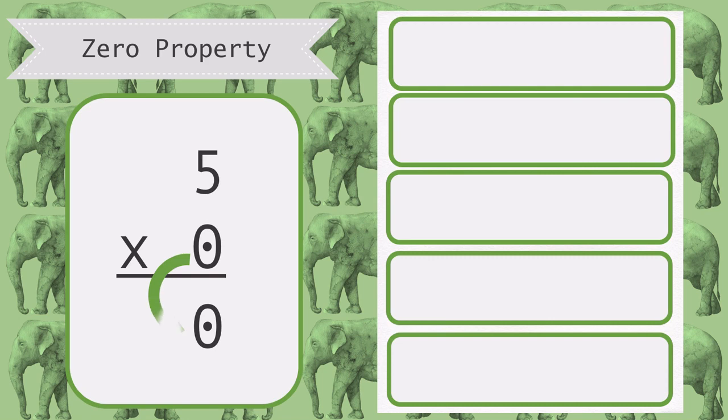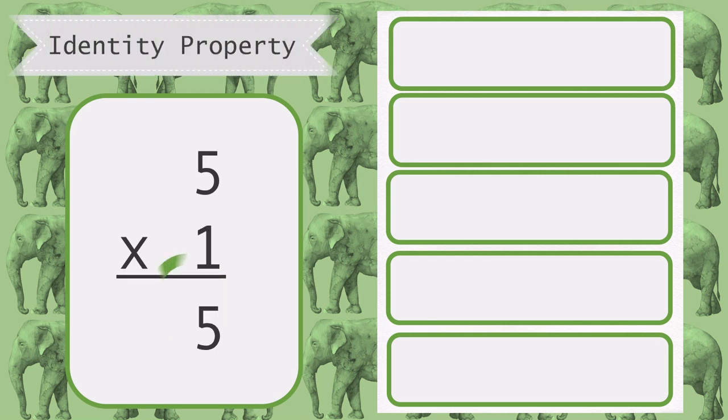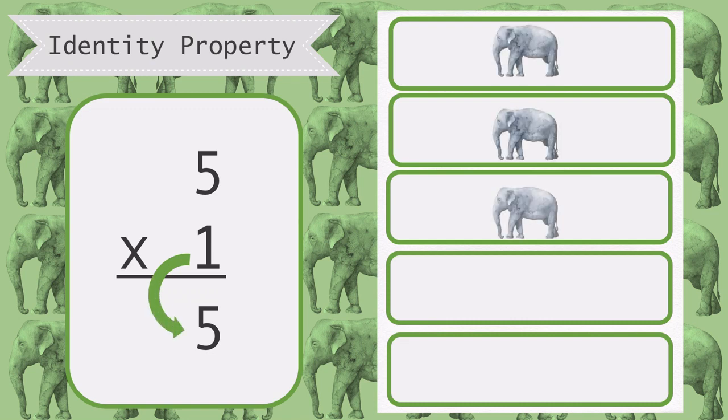The zero property states that any number multiplied by 0 is 0. So 5 times 0 is equal to 0. The identity property states that any number multiplied by 1 is that number. There are 5 groups of 1, so 5 times 1 is equal to 5.